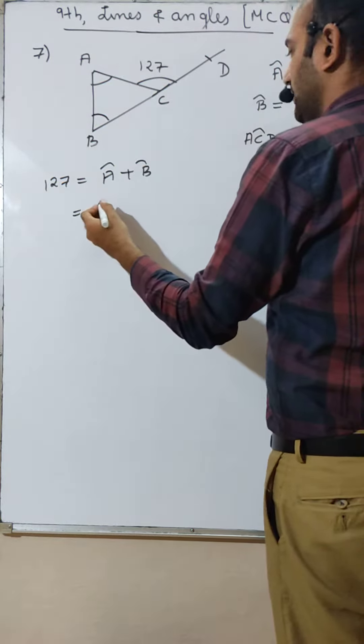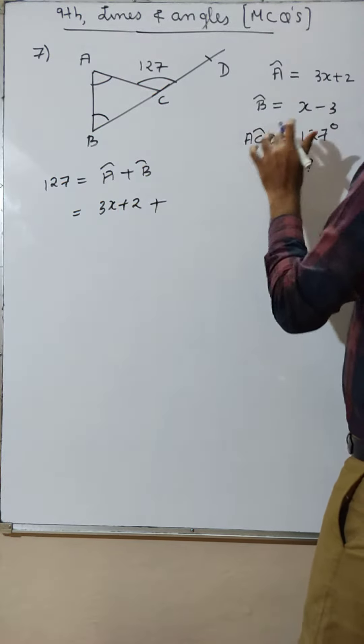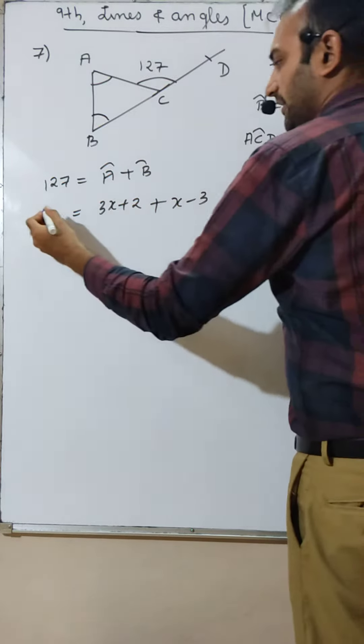Exterior angle property. Angle A is 3x plus 2, angle B is x minus 3, and this is 127.